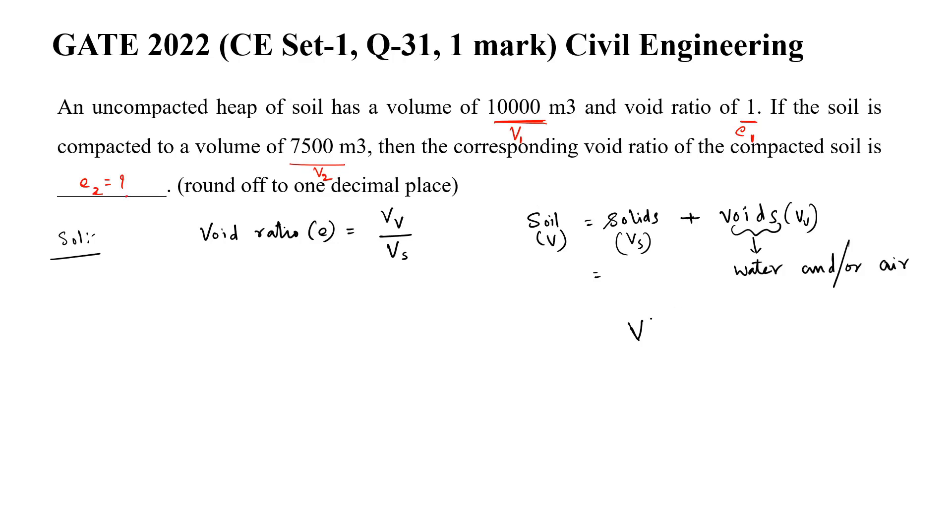So this is V. Vs will not change. V can change. Vs will not change, is constant. V can change. So this change in the total volume is due to change in the volume of voids. There is no change in Vs. You should remember this.